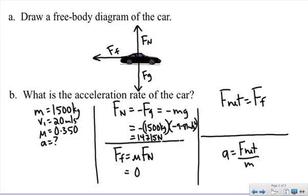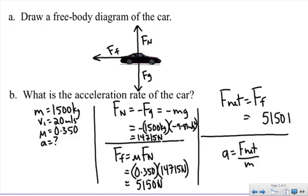So if my coefficient of friction is 0.350 and my normal force is 14,715, then my force of friction has a magnitude of 5,150 newtons. So back over here, the force of friction is 5,150 newtons, and the direction of it, it's in the opposite direction that the car is traveling. So I'm going to put a negative in front of that force of friction.